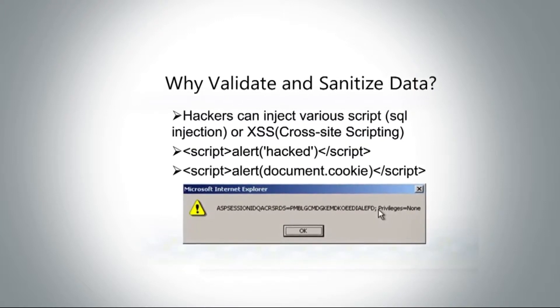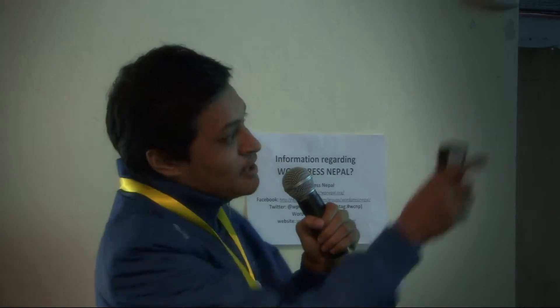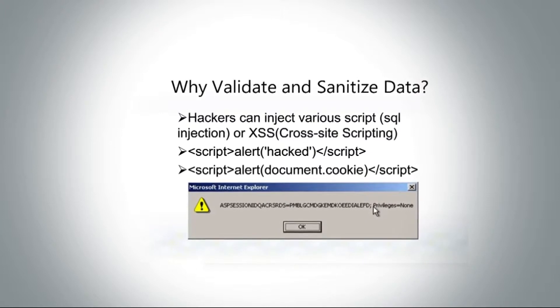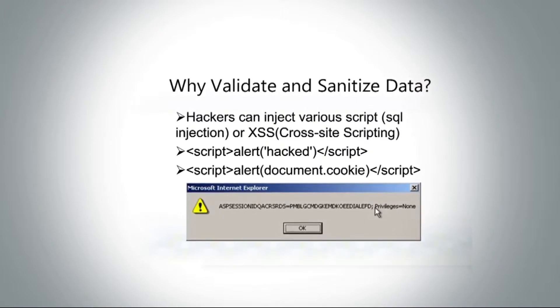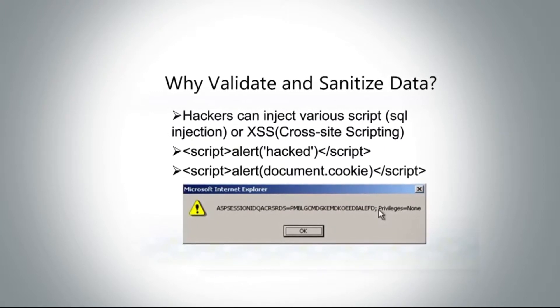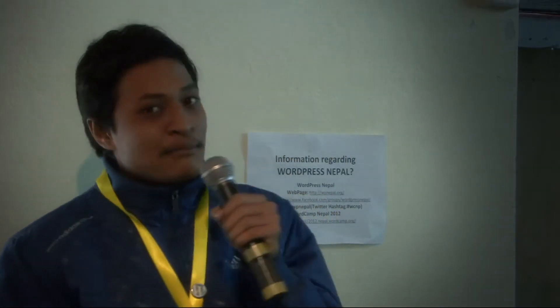If you copy this script and paste it in a search box, or in a form asking for username and password, and you are successful in sending it to the database, it creates a pop-up that gives you session IDs and privilege information. What hackers can do with this little piece of information is beyond our imagination. This is just an example of how SQL injection or cross-site scripting works — they can also be injected via hyperlinks or other ways. To stop all these things, we should properly validate the data.